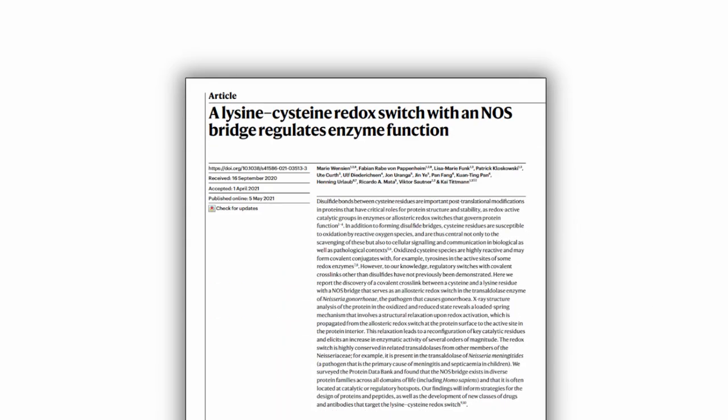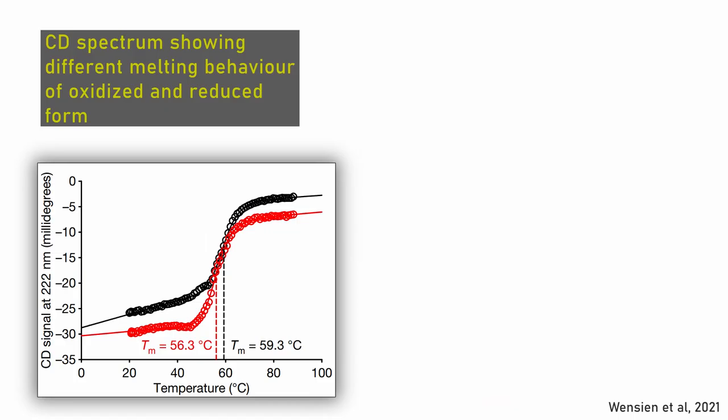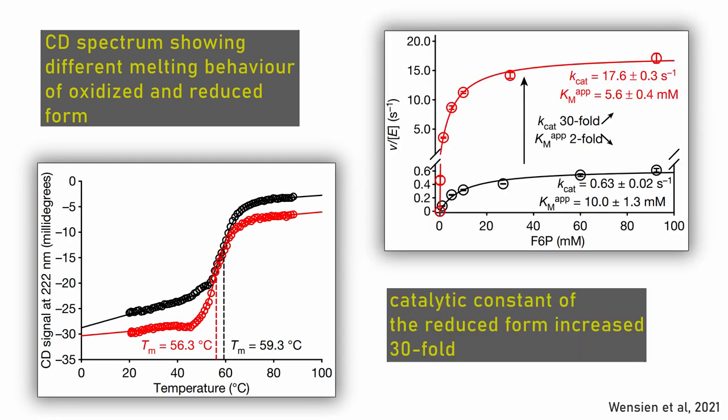It led to the discovery of a covalent crosslink between cysteine and lysine. This crosslink has an important impact on a protein's 3D structure. Also as a reversible bond, it can serve as a regulatory switch for enzyme function and is the only known covalent switch besides disulfide bonds.